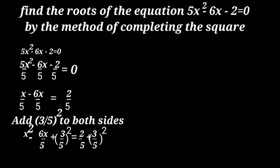The left side factors to (x - 3/5)² which is equal to 2/5 + 9/25.